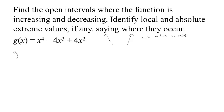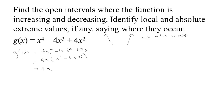Let's take the derivative and analyze the function. We get 4x cubed minus 12x squared plus 8x. Factoring out 4x gives x squared minus 3x plus 2, which factors further as (x minus 2)(x minus 1). So the derivative is 4x(x minus 2)(x minus 1). The critical points occur where the derivative equals zero: at x equals 0, x equals 1, and x equals 2.